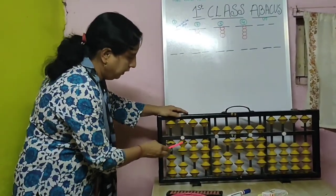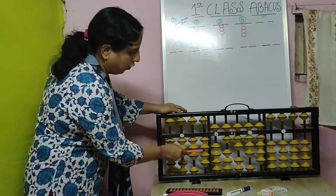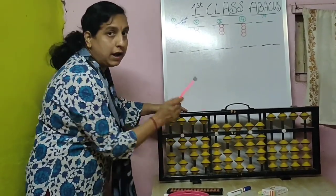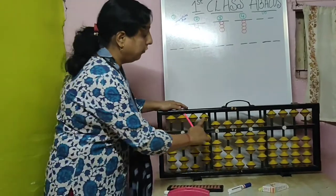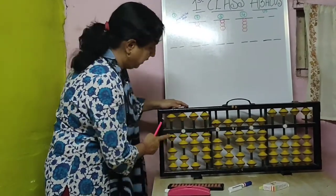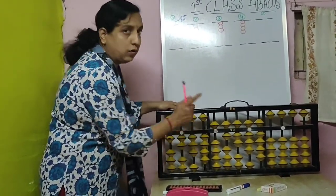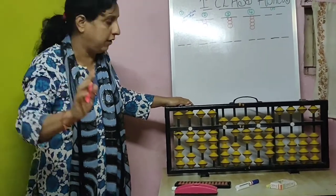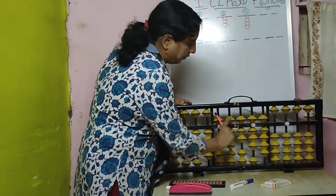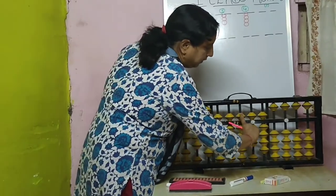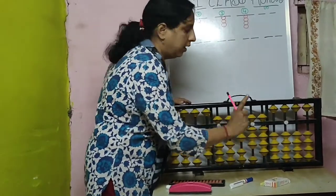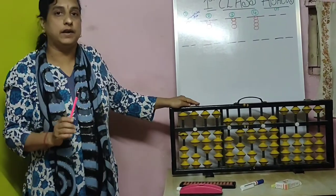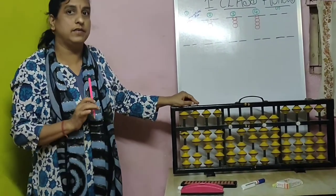So this is 1, 2, 3, 4 and this is 5. Upper bead value is 5, that's why we have to use 5 like this. This is 1. And so I don't make confusion in 1 and 5. This is 6 — 1 upper bead, 1 lower bead. Then this is 7, this is 8, and this is 9. I hope you have practiced all these 9 numbers.